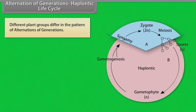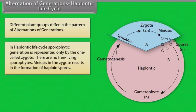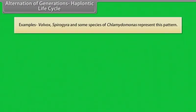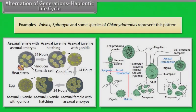In haplontic life cycle, sporophytic generation is represented only by the one-celled zygote. There are no free living sporophytes. Meiosis in zygote results in the formation of haploid spores. The haploid spores divide mitotically and form the gametophyte. The dominant photosynthetic phase in such plants is the free living gametophyte. Examples: Volvox, Spirogyra and some species of Chlamydomonas represent this pattern.